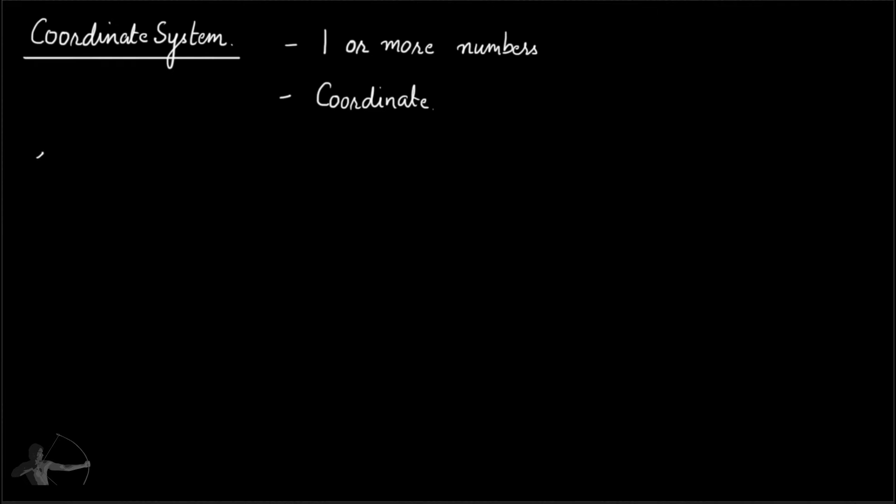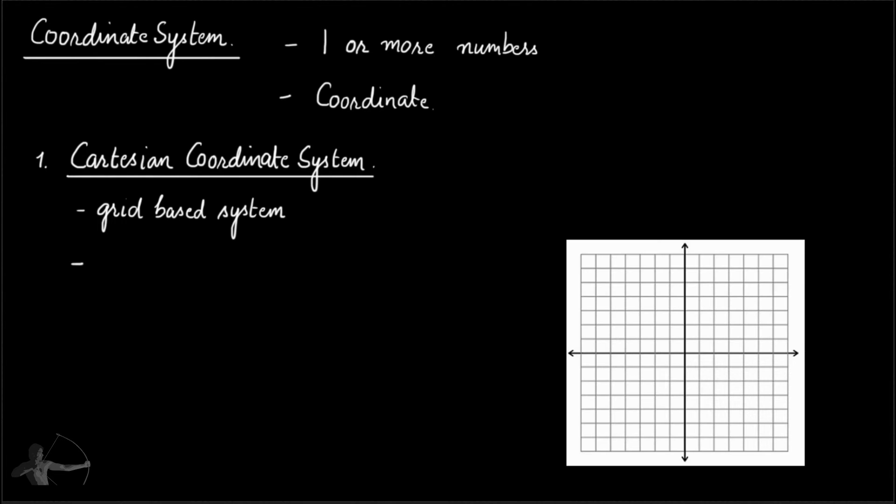And first coordinate system that we will understand is Cartesian coordinate system. It's a grid based system. And graph paper is one of the best examples of defining Cartesian coordinate systems in 2D plane, where a position of a point can be defined by the distance of the intersection of axis or perpendicular lines.